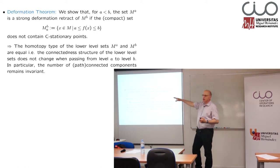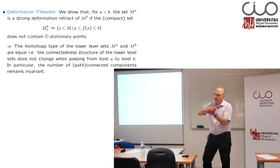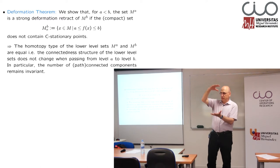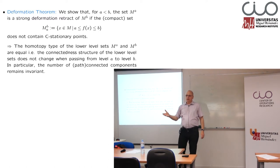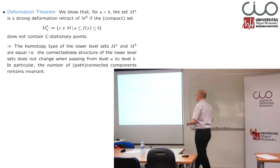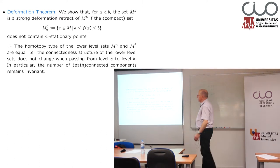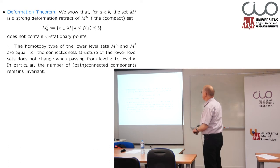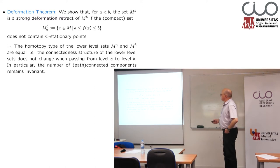This is called a strong deformation retract. You have one set, and with a homotopy you transform it to another set without changing the topological structure. That is when we have no stationary point between these two levels. Then naturally arises the question: what happens if we have a stationary point? And we will see that exactly the so-called C stationary points, which I will define later, give rise to a change in the topological structure.